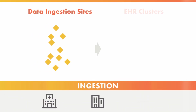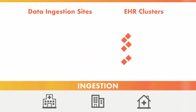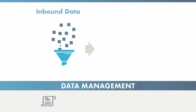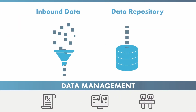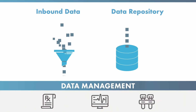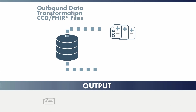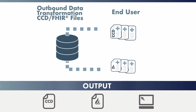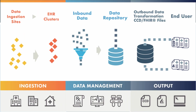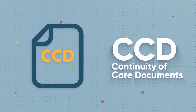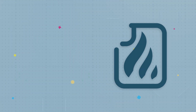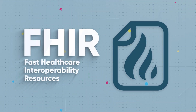The Data Aggregator Validation Program evaluates healthcare data management and exchange from the point of care at the doctor's office to the end user, such as a health plan. NCQA validated organizations, or data streams, have demonstrated that the patient information they exchange is valid, accurate, and maintains its integrity from ingestion to output. Data evaluated in the program must be in CCD, continuity of care documents, or FHIR, fast healthcare interoperability resources.